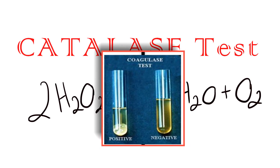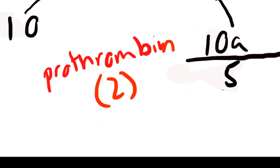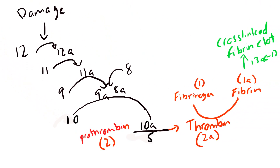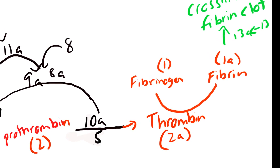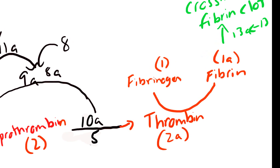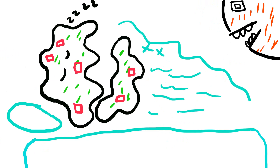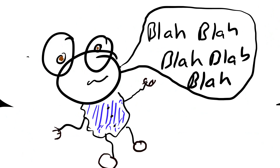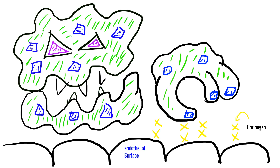Staph aureus is coagulase positive. The coagulase interacts with prothrombin — aka factor 2 — on the coagulation cascade, eventually activating it. It then activates factor 1, which is fibrinogen, and then fibrin. Once it has this fibrin, it pretty much wraps itself around it like a blanket, protecting it from phagocytosis. There are actually two types of coagulase: bound coagulase, which is literally bound to the cell wall and allows clumping, and free coagulase, which shoots out everywhere.